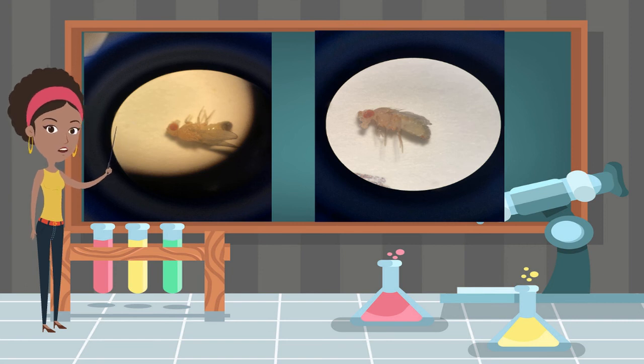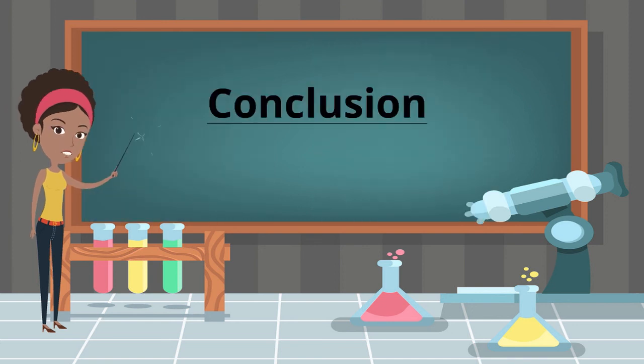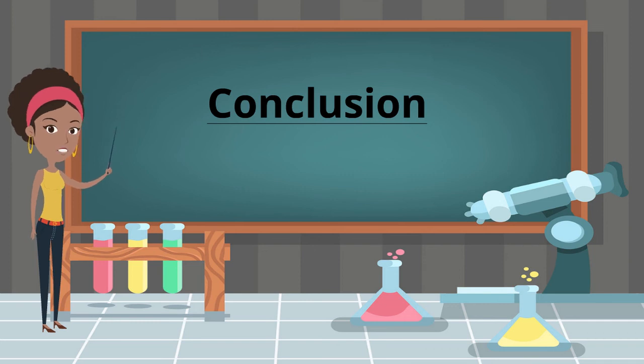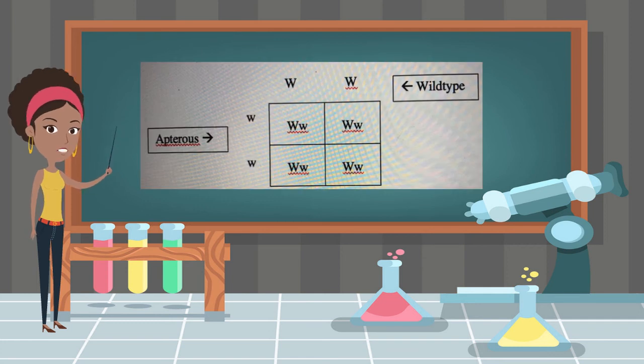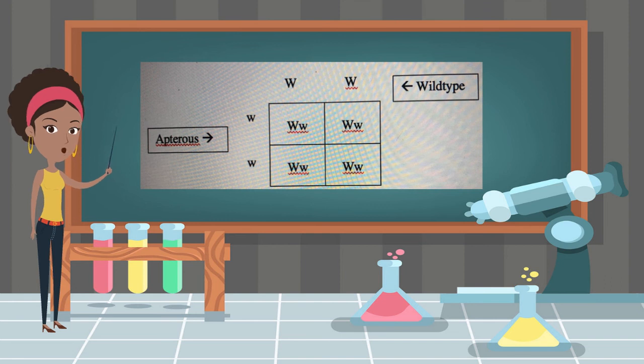In conclusion it appears that the apterous mutant of the Drosophila melanogaster is autosomal recessive to wild type wings. In the P generation all the wild type females had wings, however, the apterous mutants did not. When they mated all of the F1 progeny produced had wings, which indicated that this trait could not be sex linked because the trait was prevalent in both genders. This cross indicates this.